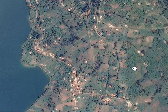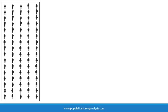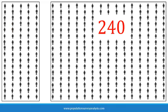Let us say we are studying the populations of two villages. One village has 80 households and the other has 240 households. In terms of sampling, both of these populations are small, but the fact that one is smaller than the other matters.